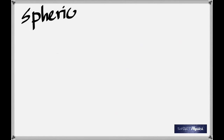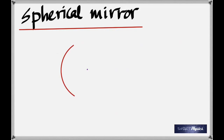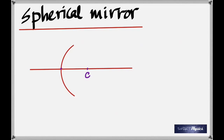Spherical mirrors. A spherical mirror is a part of a sphere — I drew a sphere and then erased part of it to show you that. Therefore it would have a center — the center of the sphere — which is called the center of curvature. If you take the geometrical center of this mirror, that point is called the pole. The line joining the pole and the center of curvature is called the principal axis.